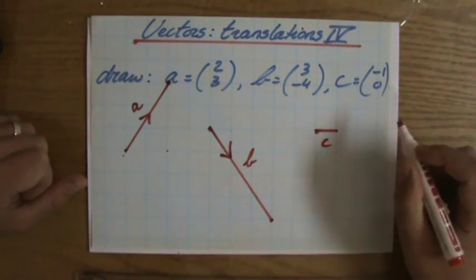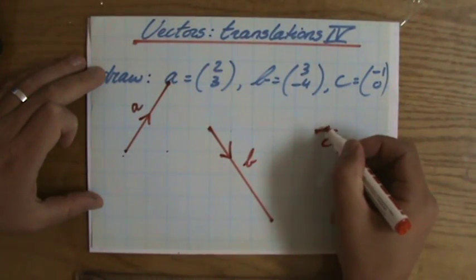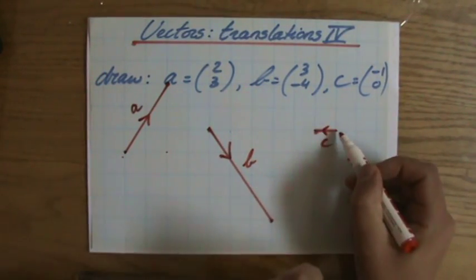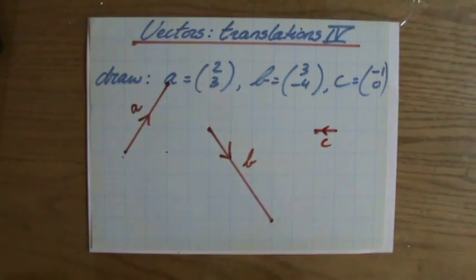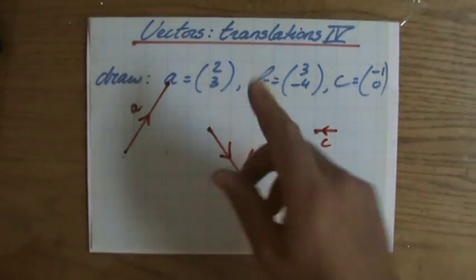You do this with a pencil and a ruler as well, and the direction is like that. I start here and I finish there. Okay, it's time to start adding and subtracting some vectors. I'll see you at the next video, bye bye.